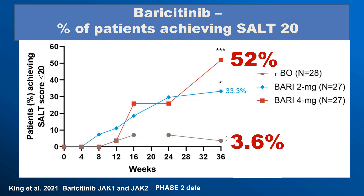Looking at baricitinib data with a slightly different and longer study design, this is the percentage of patients who achieved SALT 20. SALT 20 is considered almost healthy — meaning only 20% of the scalp is hairless — and many experts believe it is cosmetically possible to cover that area with remaining hair. This status of almost healthy was achieved by 52% of patients after 36 weeks, with a placebo number of 3.6%. This is important: the chance of spontaneous regrowth in placebo groups is only between 1 and 4%, so the old 'wait and see' approach to alopecia areata treatment is no longer valid.